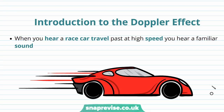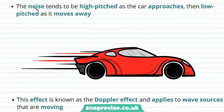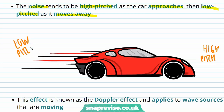We're going to introduce the Doppler effect using the example of a race car. When you hear a race car travel past at high speed you hear a familiar sound. The noise tends to be high pitched as the car approaches and then low pitched as it moves away.